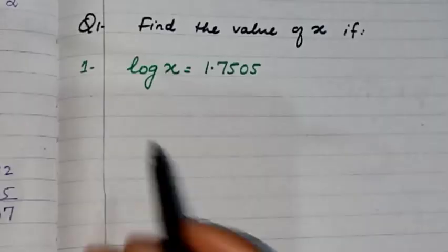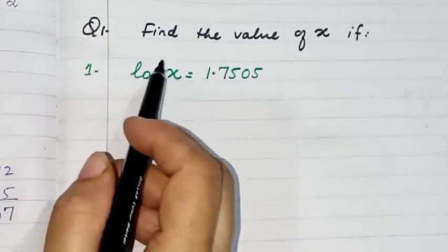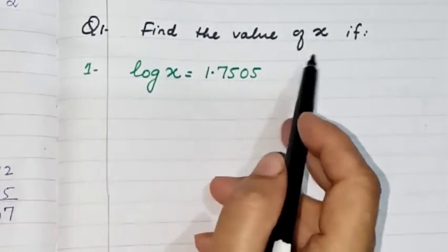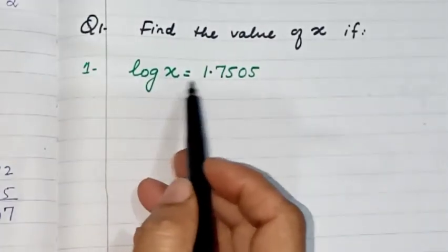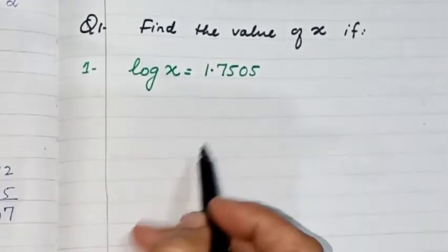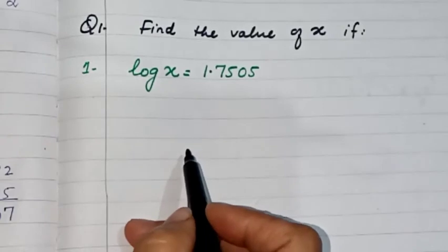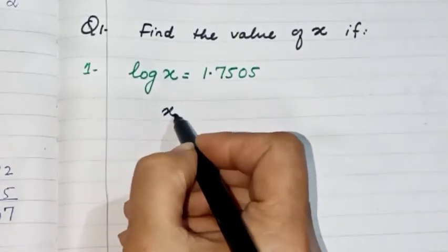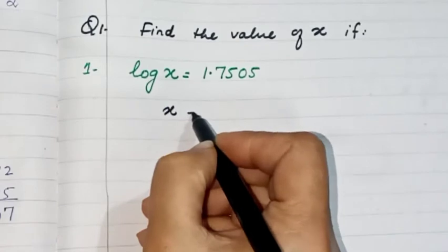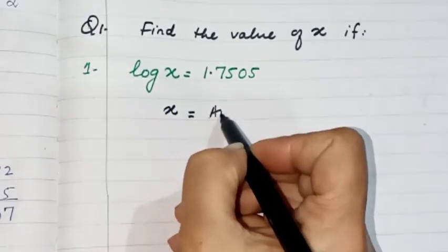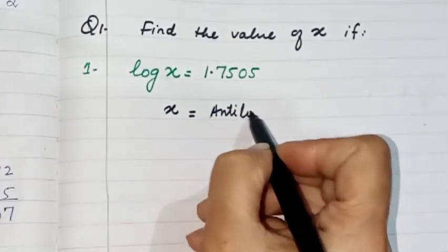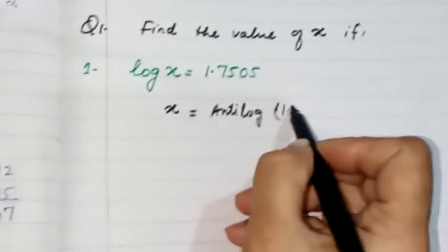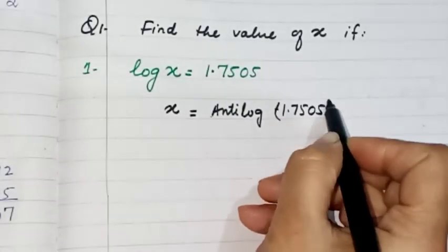I am starting question number 1 of exercise 3.5. Find the value of x if log x is given as 1.7505. First of all, we have to write it as x is equal to anti-log of 1.7505.